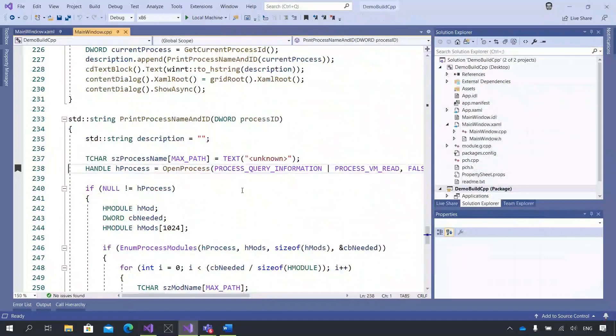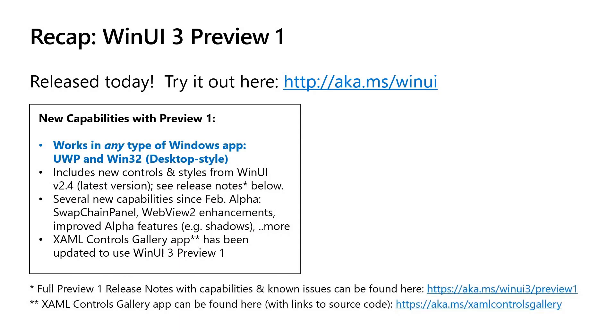Happy XAML coding. Thanks, Miguel, for showing us one of the first ever desktop apps using WinUI 3 Preview 1. Preview 1 just came out today, which means it's available to try out right now. You can obtain it from our WinUI website at aka.ms/WinUI. If you've already tried out the earlier alphas, the steps will feel familiar — there's a VSIX that you install to get the new project templates for Visual Studio. There are some interesting new capabilities to highlight in Preview 1. The biggest one we've already talked about is the support for Win32 or desktop style apps. UWP apps are also still supported, and there's also new controls, the ability to do custom high performance rendering with SwapChainPanel, and a bunch of other improvements as well.